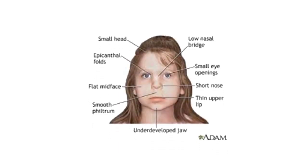The thalassemia facial features include a small head, presence of epicanthal folds, thin upper lip, short nose, low nasal bridge, and smooth philtrum. This is the typical thalassemia face you will see in cases of thalassemia.